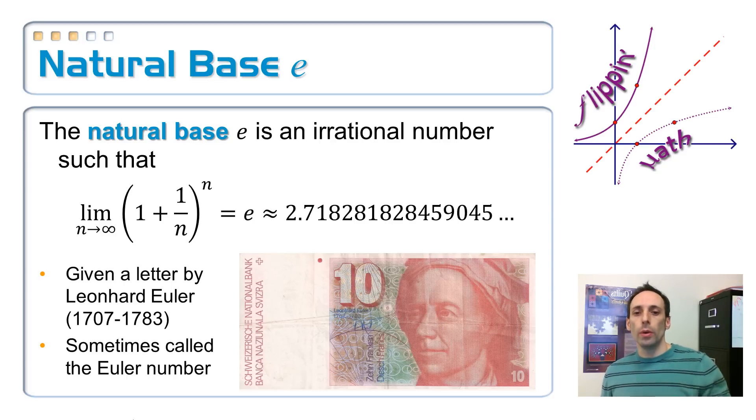They're getting closer and closer to this special number called the natural base represented with the letter E. And it is 2.71828, 1, 8, 2, 8, 4, 5, 9, 0, 4, 5. It keeps going forever just like pi.